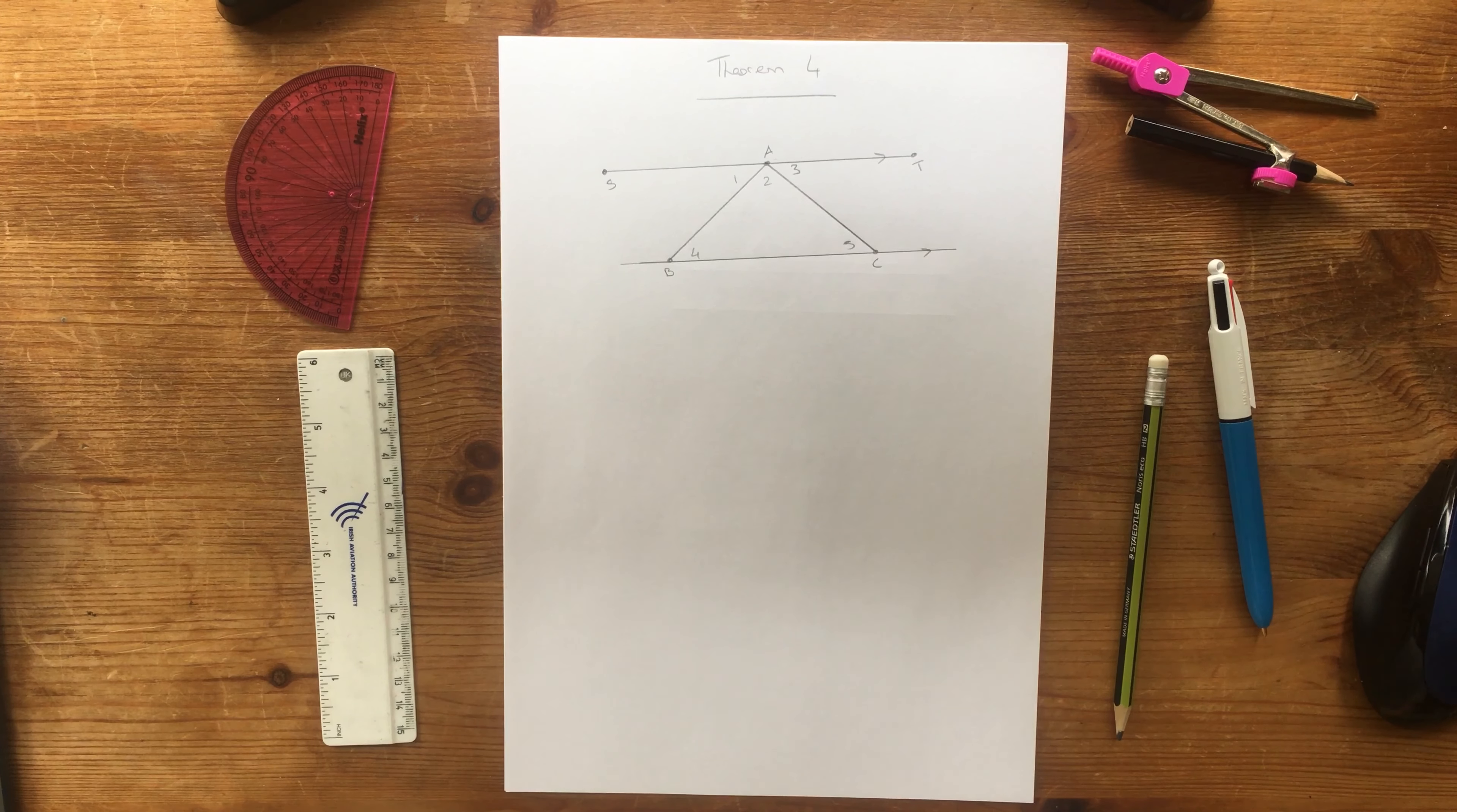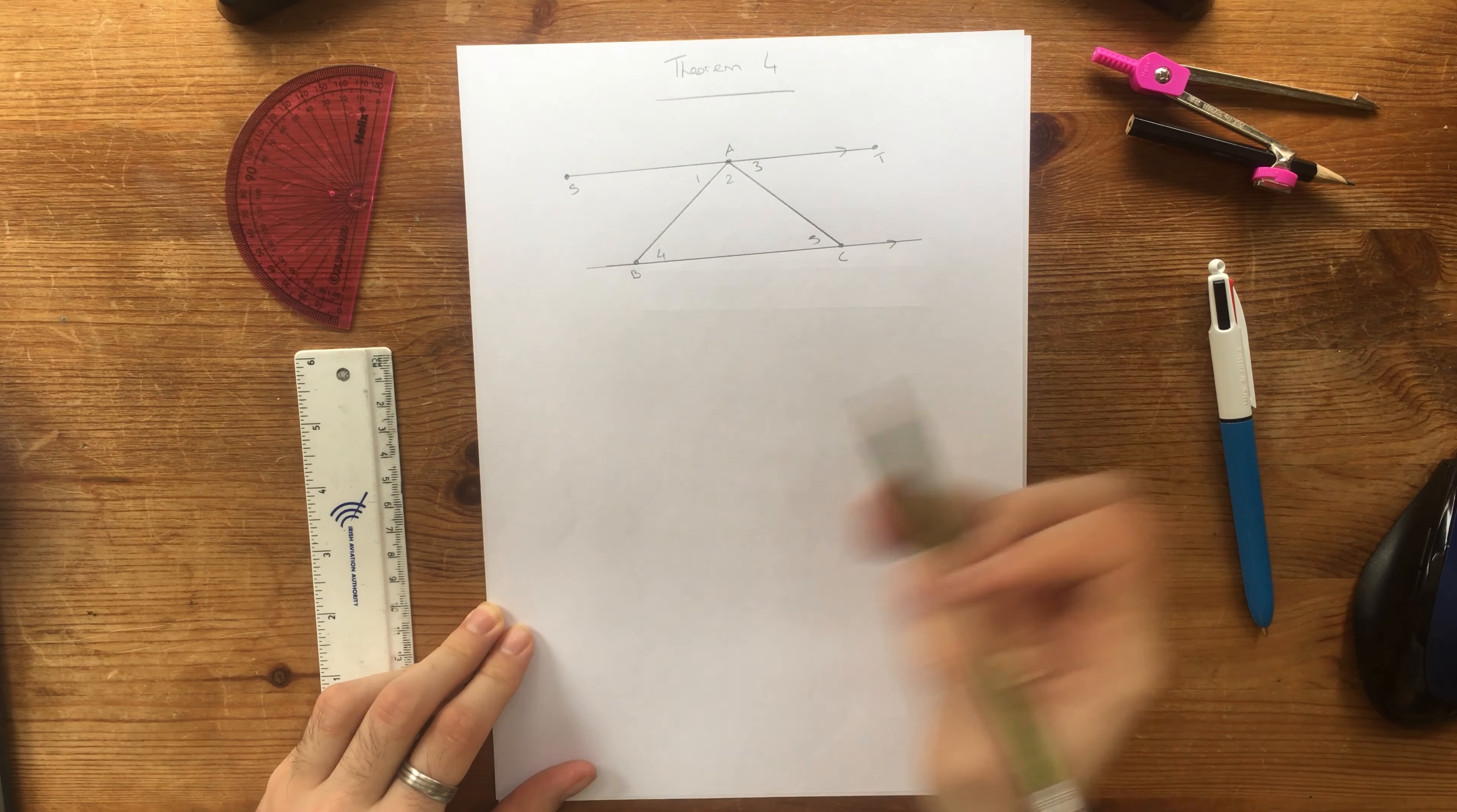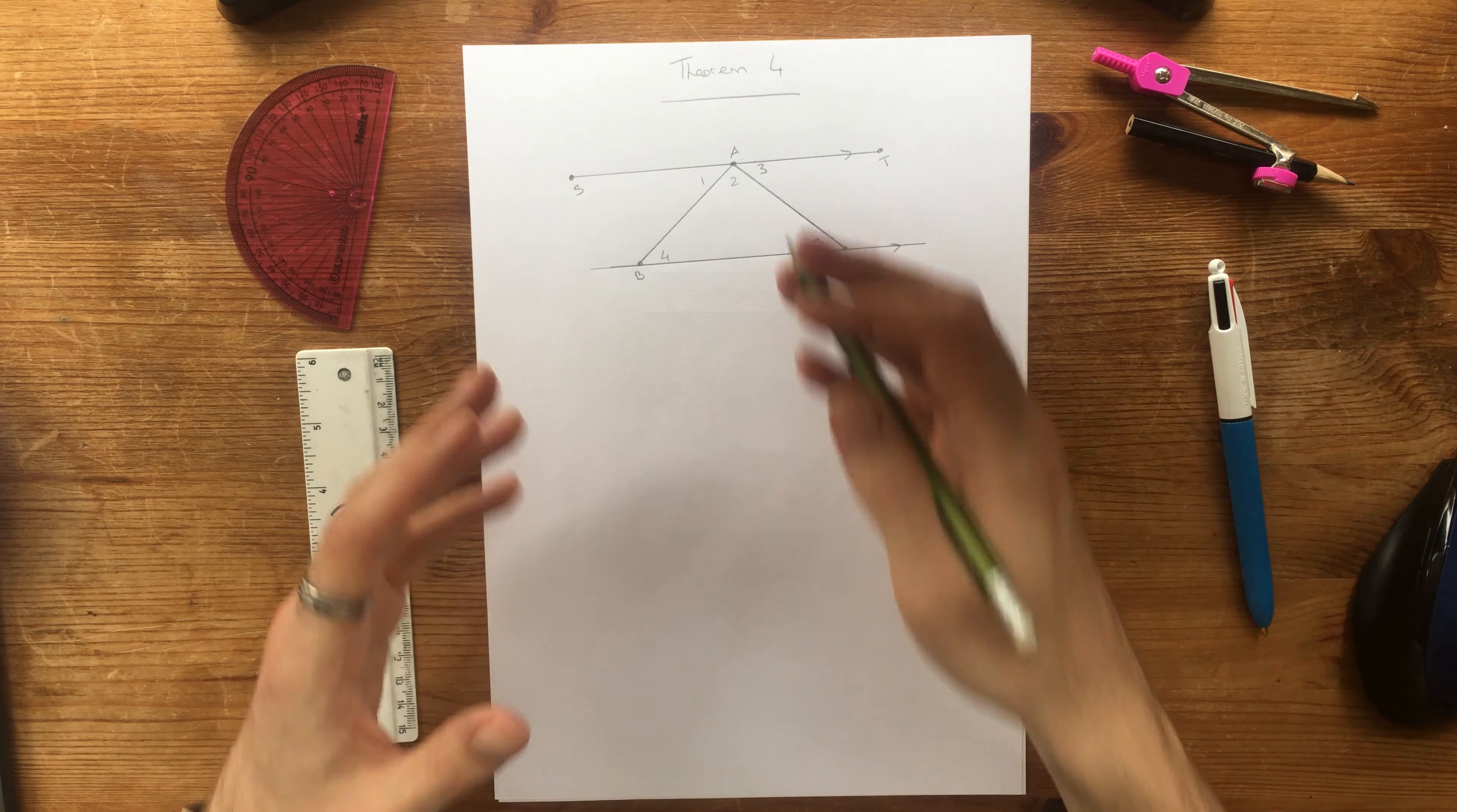Okay, so we're going to look at a question which leads us to figuring out what theorem 4 is. And it's this diagram, so all I have to tell you is that these two lines are parallel, and from our previous theorems we can work out some things about what's going on in here.